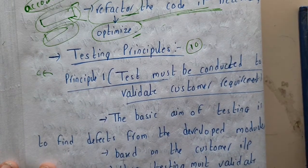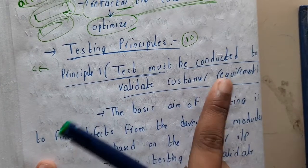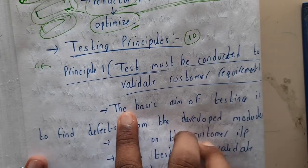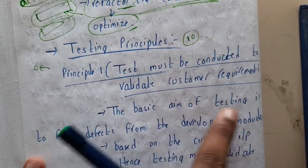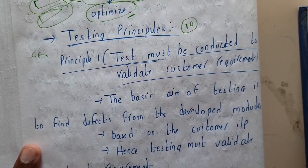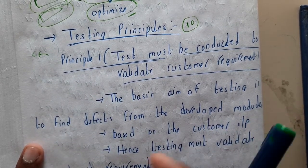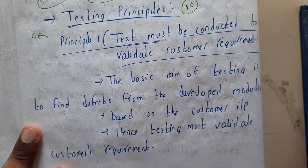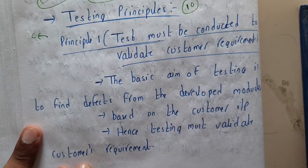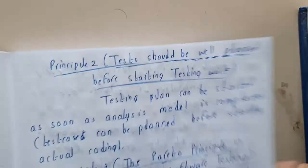Principle one: the first principle tells that testing must be conducted to validate customer requirements. The basic aim of testing is to find defects from the development modules — whatever bugs are written unintentionally in the development modules will be identified through testing. Hence testing must validate customer requirements.